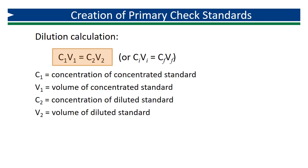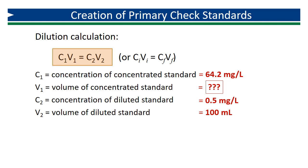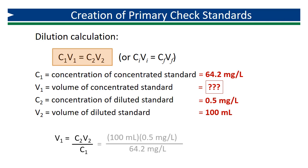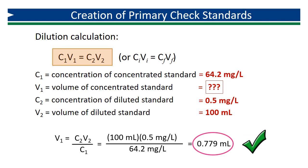Now let's apply this to our concentrated primary standards. If we want a final concentration of 0.5 milligrams per liter and a final volume of 100 milliliters, and our initial concentration is 64.2 milligrams per liter — certified by the manufacturer — we can determine the volume needed of the concentrated standard. Rearranging the formula by dividing both sides by C1 leaves V1. Plugging in the numbers, we calculate that we need 0.779 milliliters of the concentrated standard to make a 100 milliliter dilution at 0.5 milligrams per liter.